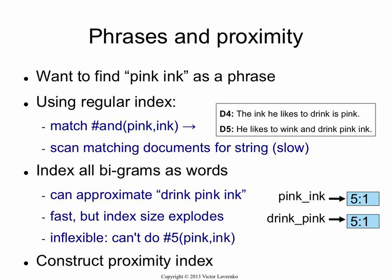So these are our normal inverted indices. Now, they operate on words, but sometimes what you like to do in your search engine is you like to allow people to search for phrases. So suppose I wanted to find 'pink ink' as a phrase rather than as two separate words in different parts of the document.